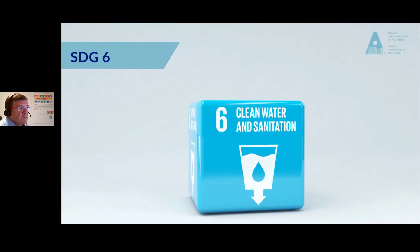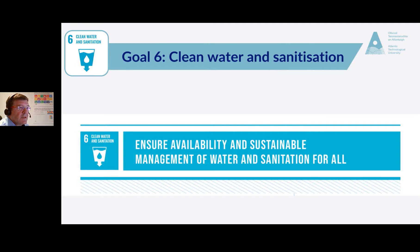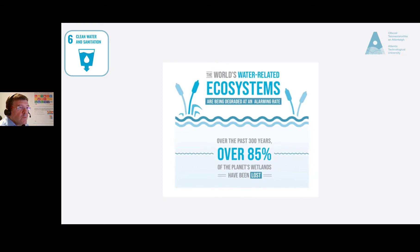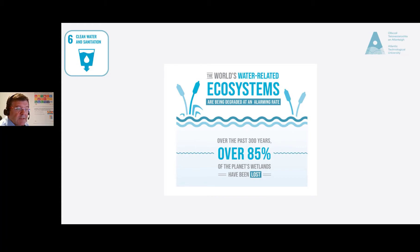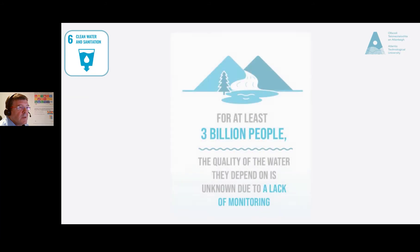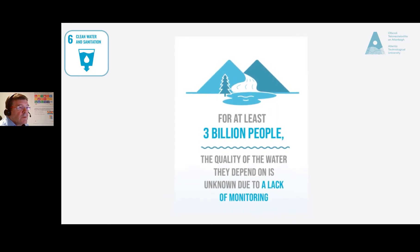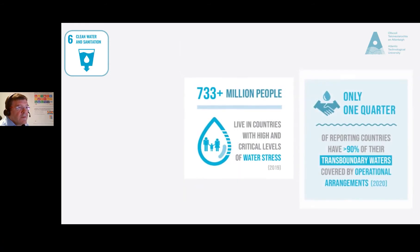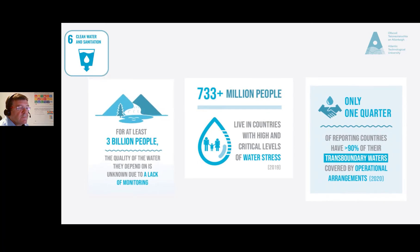The underlying principle of SDG 6 is to ensure availability and sustainable management of water and sanitation for all. The world's water-related ecosystems are being degraded at an alarming rate, exacerbated by climate change. Over the last 300 years, over 85% of the planet's wetlands have been lost. For at least 3 billion people, the quality of water they depend on is unknown due to a lack of monitoring.